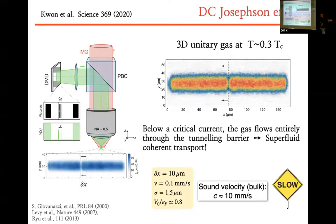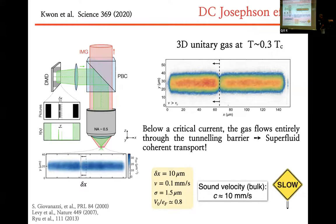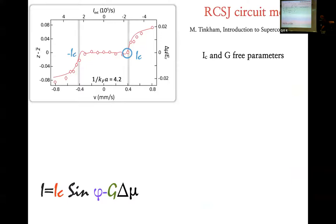It means that below critical current, the gas can flow through the barrier. We call this superfluid coherent transport. These are the numbers that we typically use. The velocity of the barrier must be very low with respect to the sound velocity. That is very crucial. If we don't do that, of course, you start to see an accumulation of atoms in one of the two reservoirs. So the atoms cannot flow coherently, cannot pass through the barrier.